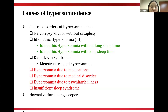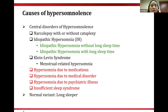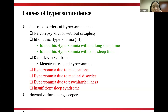Central disorders of hypersomnolence include narcolepsy, idiopathic hypersomnia, Kleine-Levin syndrome, and secondary causes such as medical disorders and psychiatric illnesses. In ICSD-2, idiopathic hypersomnia was divided into two subtypes: without long sleep time (6–10 hours) and with long sleep time (more than 10 hours). ICSD-3, the version currently used, eliminated these subtypes and combined them. Menstrual-related hypersomnia, previously a separate entity in ICSD-2, is now classified under Kleine-Levin syndrome in ICSD-3.